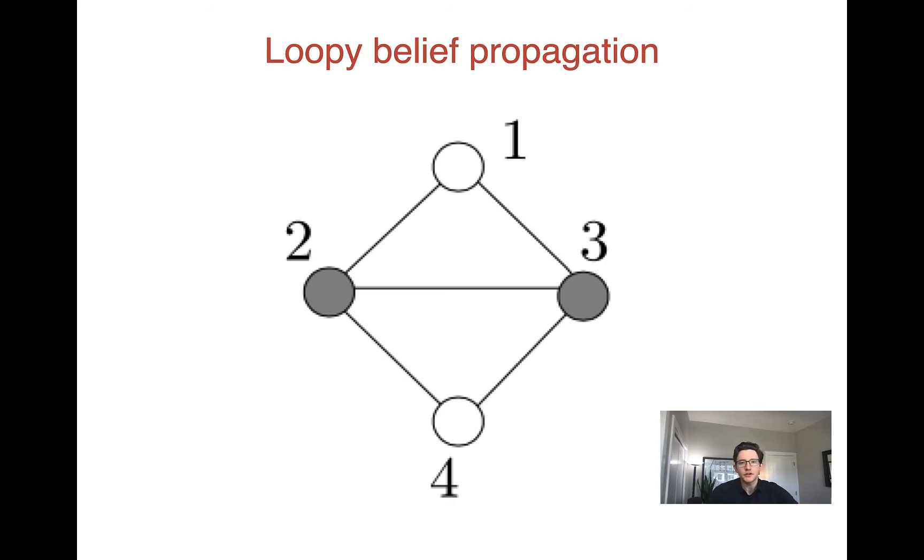For loopy belief propagation, two things are the case. One, it might not converge. That is, you might keep doing your updates and keep on changing the messages forever. So that's no good. So you might not converge. And if you do converge, you might not converge to the correct probabilities. You might not get the right answer for your inference problem.